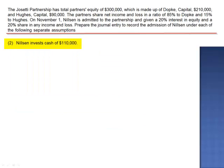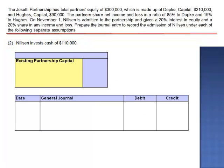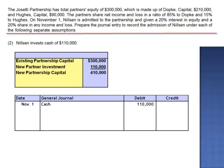Now let's see what happens if Nilsen invests cash of $110,000. The existing partnership still had assets and equity totaling $300,000. Nilsen invests $110,000 in cash, which comes into the partnership, so we'll debit cash. This $110,000 investment brings assets and equity up to $410,000. Nilsen is admitted as a 20% owner, so 20% of $410,000 is $82,000, and we credit Nilsen's capital account for $82,000.